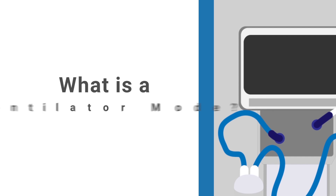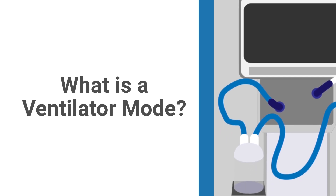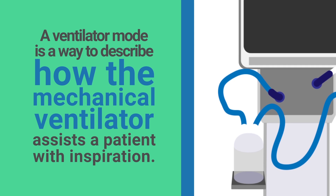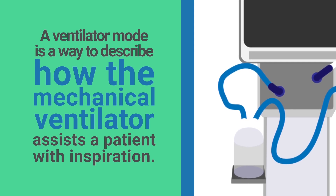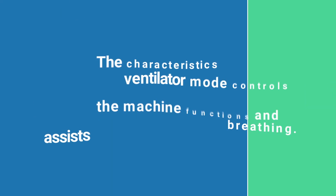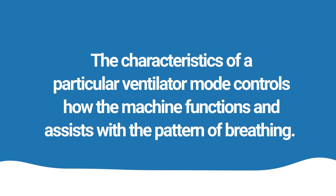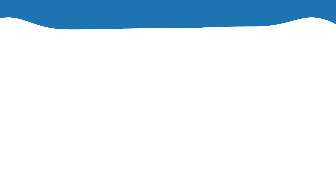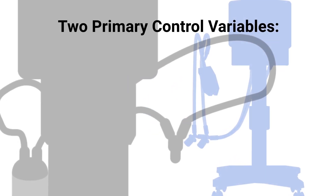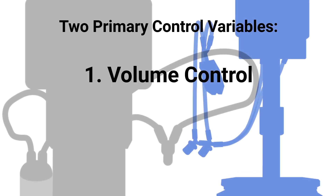First and foremost, what is a ventilator mode? A ventilator mode is a way to describe how the mechanical ventilator assists a patient with inspiration. The characteristics of a particular ventilator mode control how the machine functions and assists with the pattern of breathing. When selecting a ventilator mode, there are two primary control variables: volume control and pressure control.